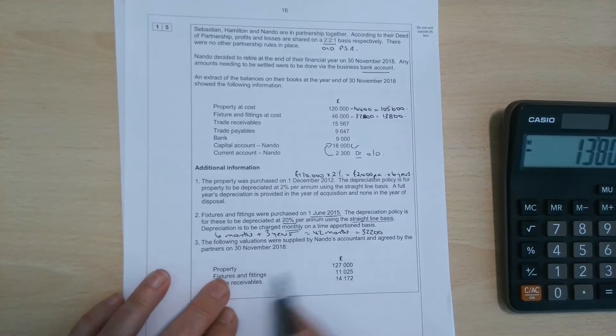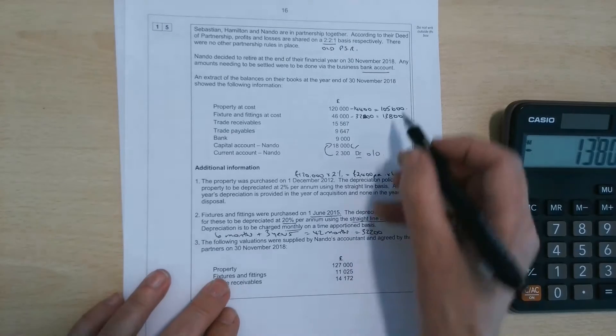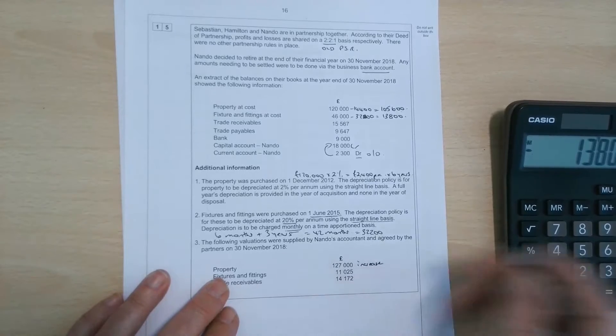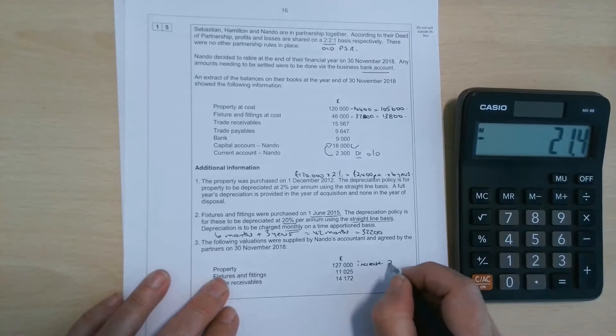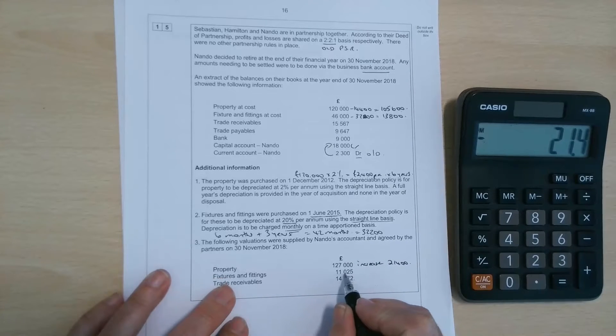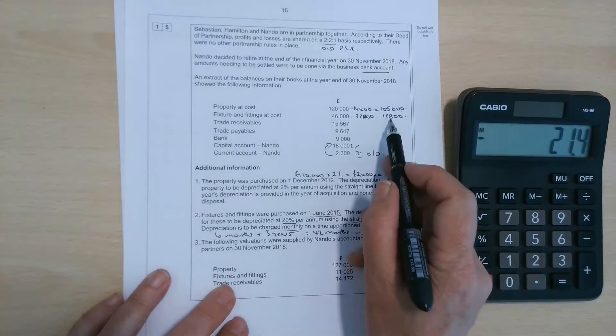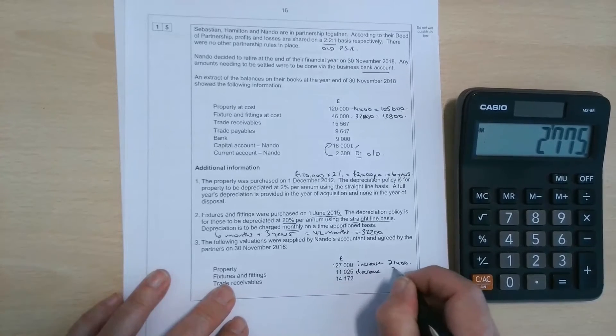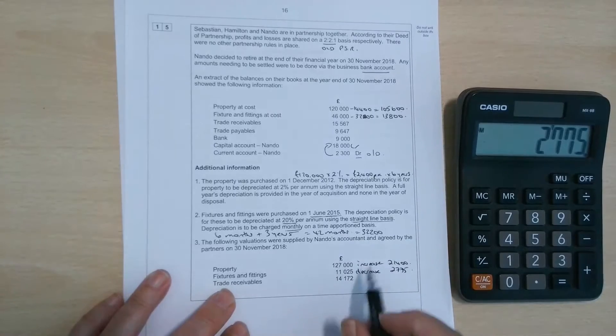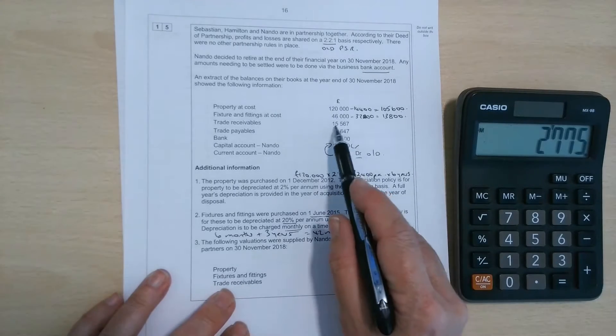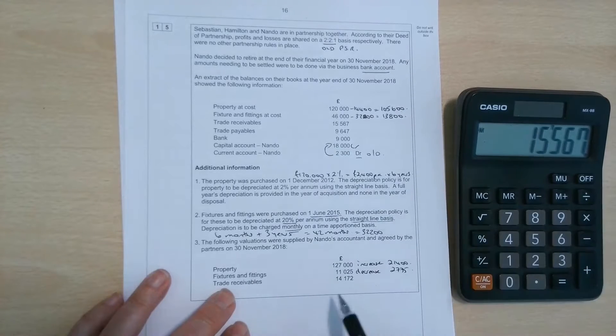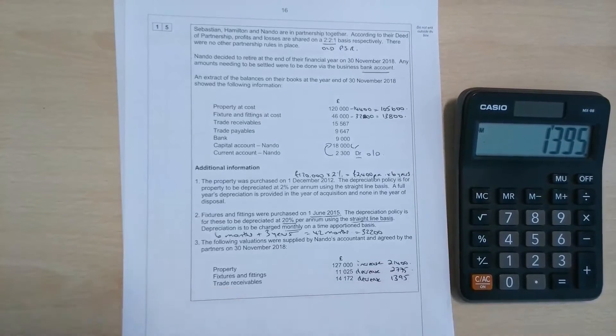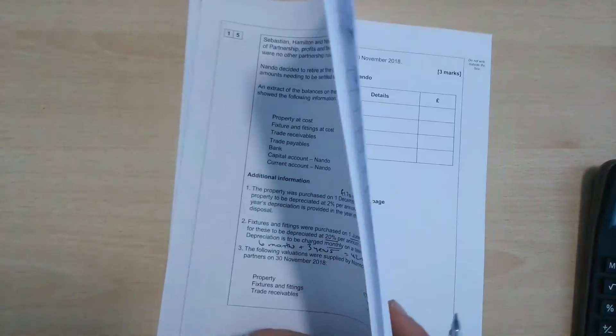So that's the depreciation dealt with. Then we've got to sort out the valuations. Property is to be revalued at 127,000. You can see at the moment, the net book value is 105,600. So that's going to be an increase of 21,400. Fixtures and fittings will be valued at 11,025. So you're currently 13,800. So they're actually going down in value. So there's a decrease in value there of 2,775. And the trade receivables, we've got some irrecoverable debts in there. So we had 15,567. They're going down to 14,172. So that is also a decrease of 1,375.